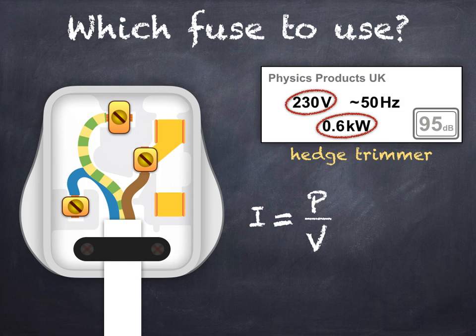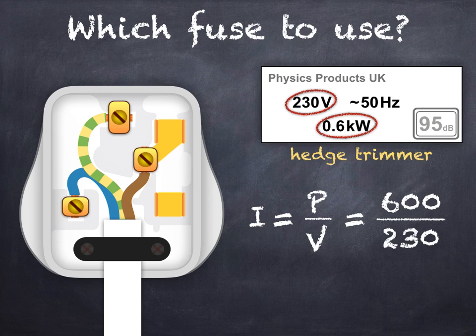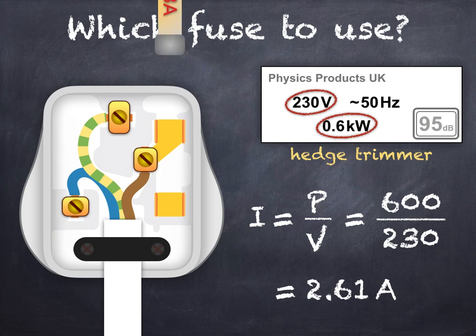The second example is a hedge trimmer with a power rating of 0.6 kilowatts. Remember that this should be converted to watts, since that's the correct SI unit for power. The current then is 600 divided by 230 is equal to 2.61 amps. Again, a 3 amp fuse should be used.